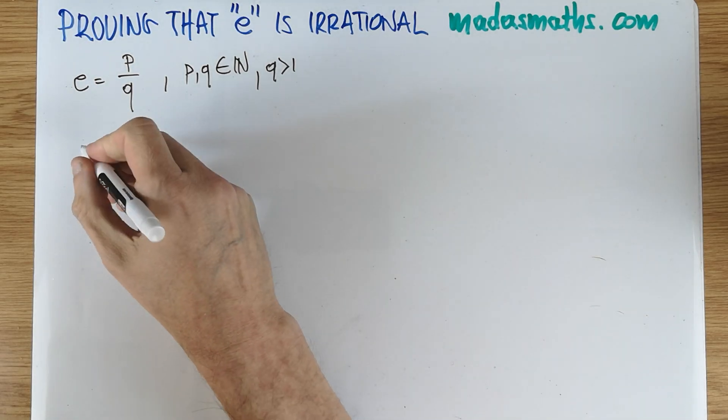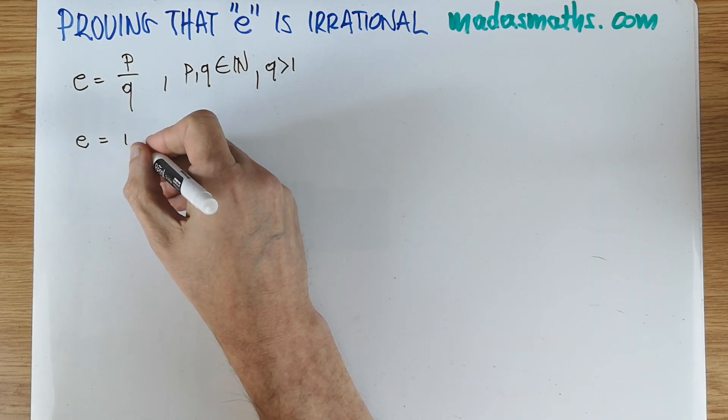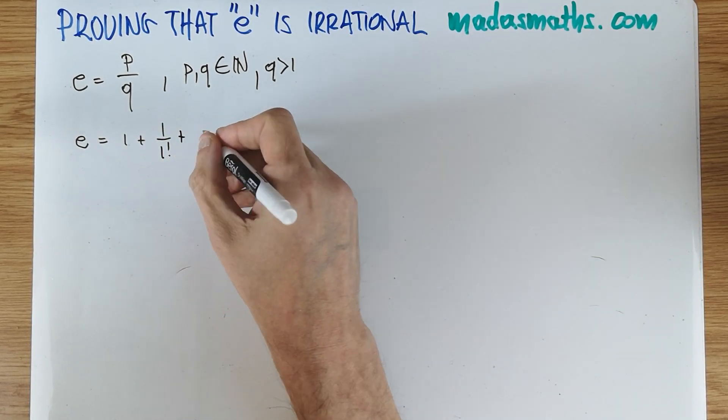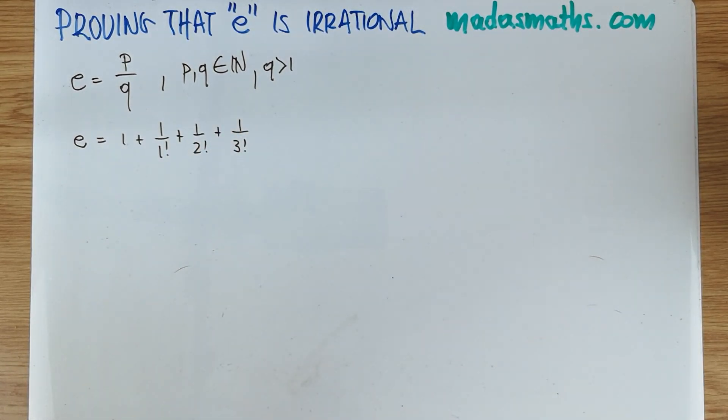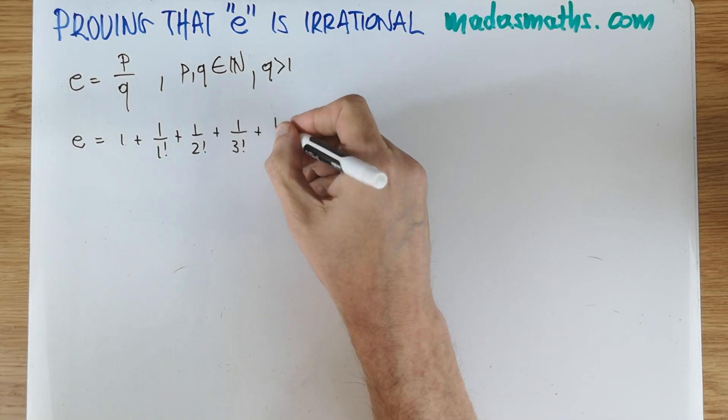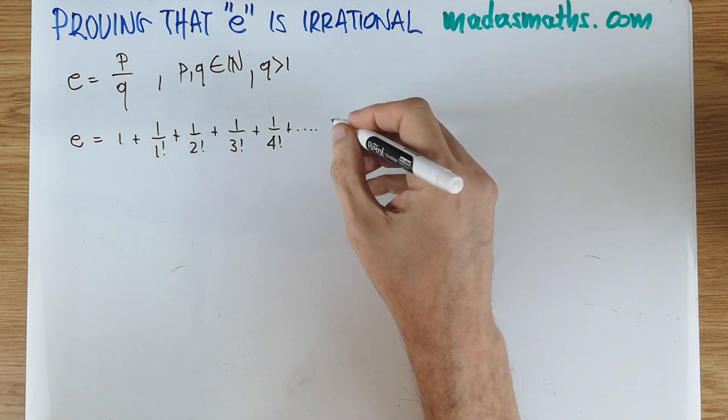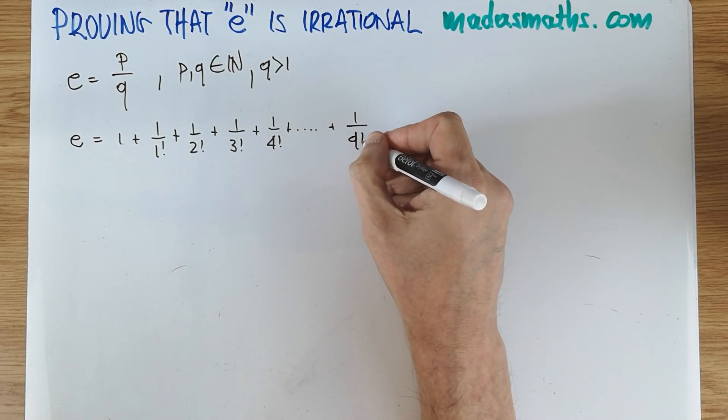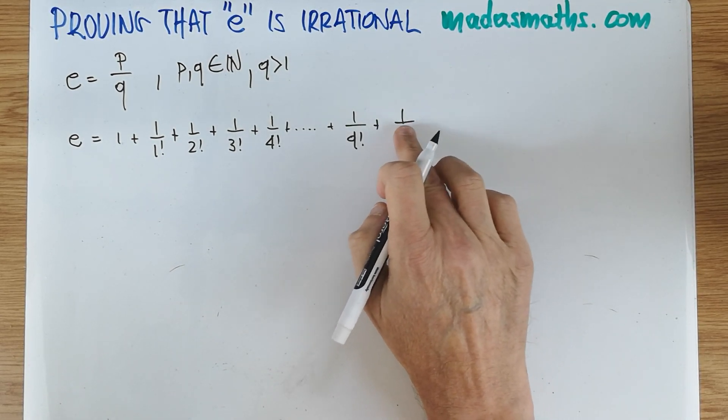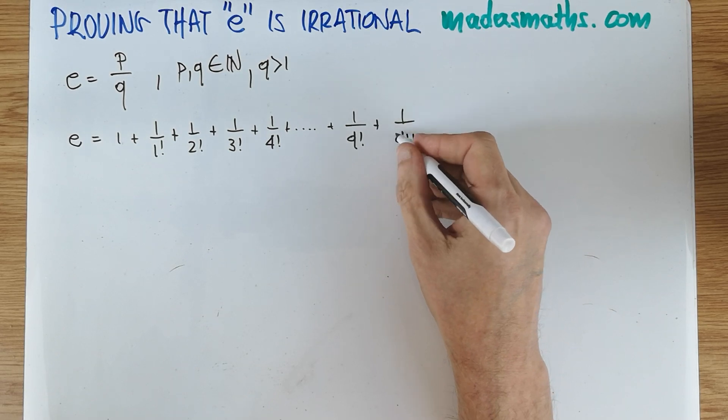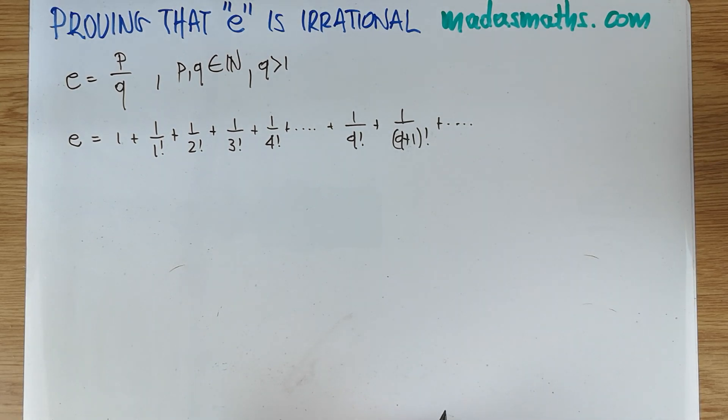So of course we can write e as a power series as we know it. So it's going to be 1 plus 1 over 1 factorial plus 1 over 2 factorial, and so on. And we continue to write this until of course we reach the q factorial. That's how the proof goes. Plus 1 over q plus 1 factorial forever. So that's definitely our e.